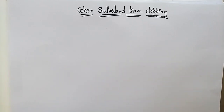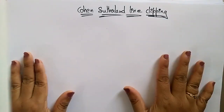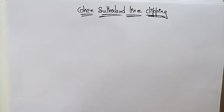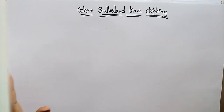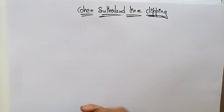Welcome back. Let's continue with the line clipping algorithm. In the previous video, I explained what line clipping is: lines present inside the clipping window are accepted, and lines outside the clipping window are rejected and removed. Now let's see one type of clipping algorithm — the Cohen-Sutherland line clipping algorithm — which helps us remove the lines that are outside the window.